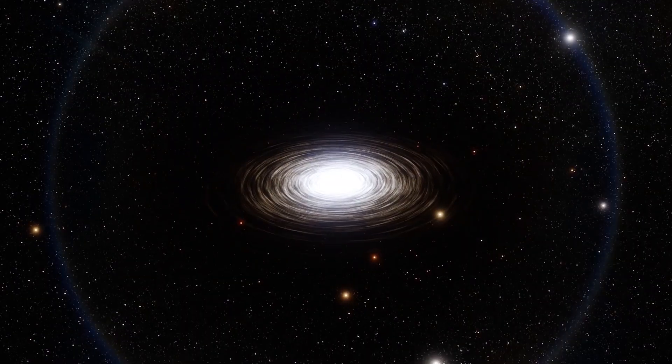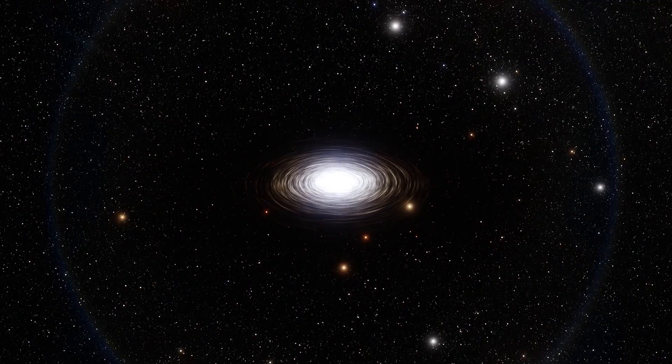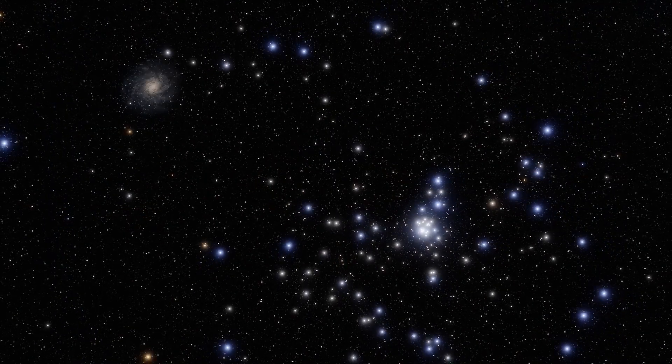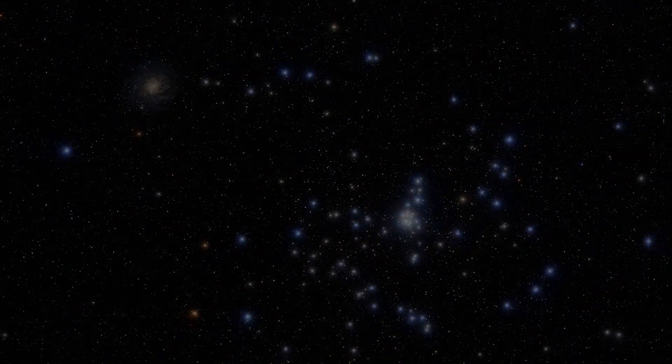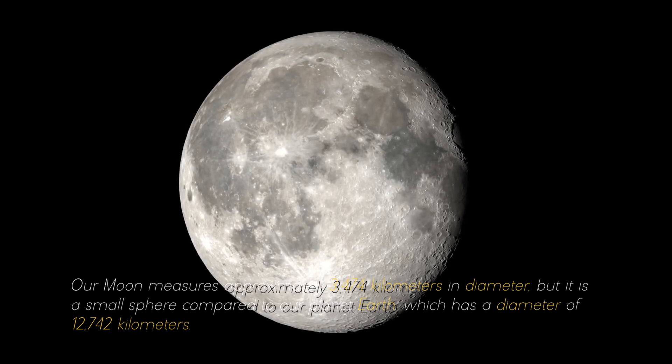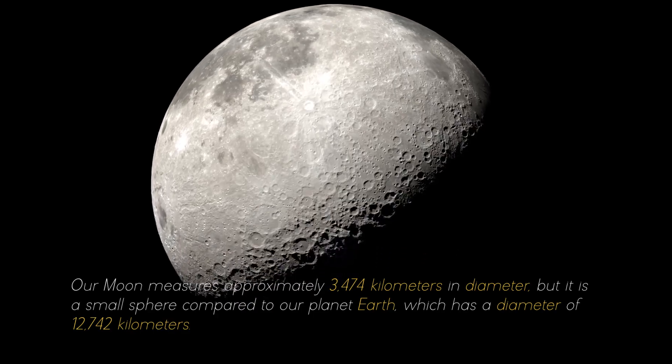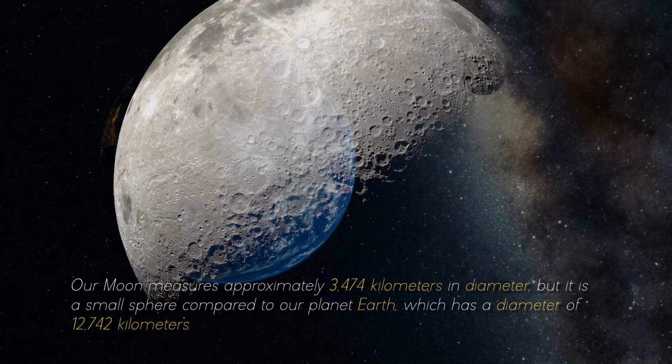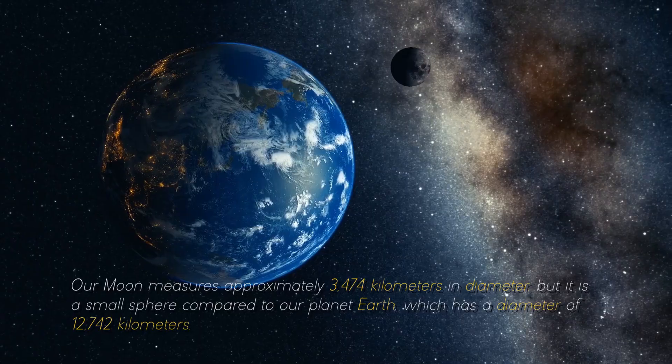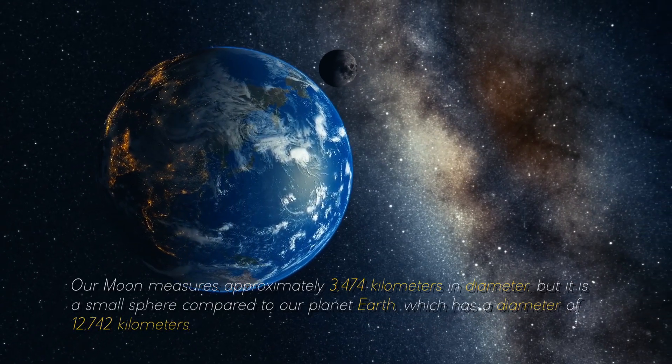To give you an idea of the colossal objects and structures that abound in the cosmos, it is necessary to start at the beginning. Our moon measures approximately 3,474 kilometers in diameter, but it is a small sphere compared to our planet Earth, which has a diameter of 12,742 kilometers.